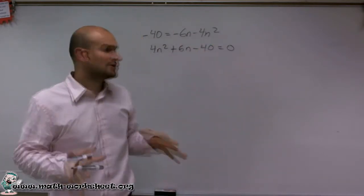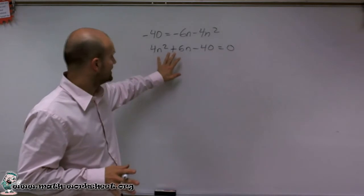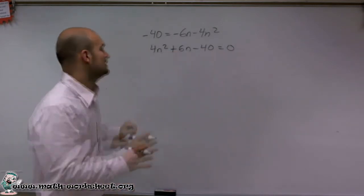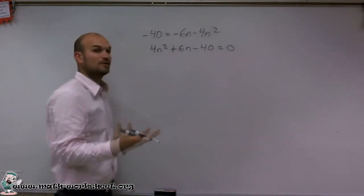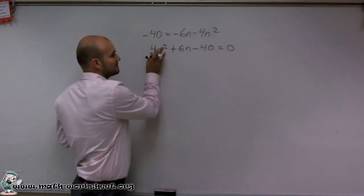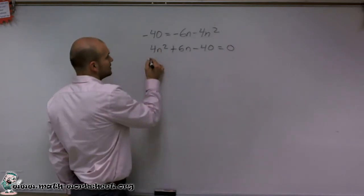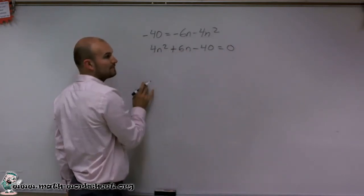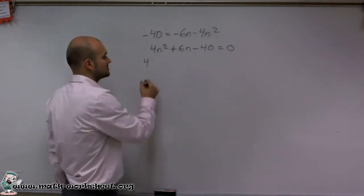So now, remember, the main goal in completing the square, the first thing we want to do is we need to get a perfect square trinomial. To do that, we have to first factor out a 4. So I'm going to factor out a 4 out of my first two terms.